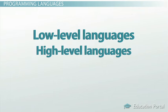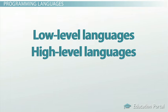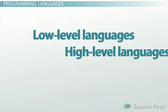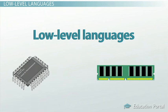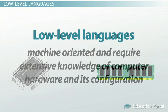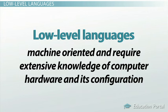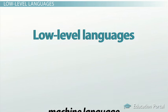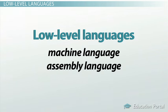There are two major types of programming languages: low-level languages and high-level languages. Low-level languages are referred to as low because they are very close to how different hardware elements of a computer actually communicate with each other. Low-level languages are machine-oriented and require extensive knowledge of computer hardware and its configuration. There are two categories of low-level languages: machine language and assembly language.